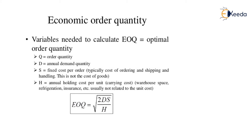The variable needed to calculate the EOQ is the optimal order quantity, or Economic Order Quantity. The value of EOQ is found using the formula: EOQ = √(2DS/H). Here, D indicates the annual demand quantity, S indicates the fixed cost per order — typically the cost of ordering, shipping, and handling, not the final cost of the goods. H indicates the annual holding cost per unit, which is the carrying cost, including warehouse space, refrigeration, insurance, etc., which is not directly related to the unit cost.